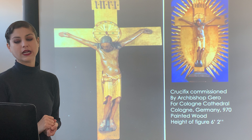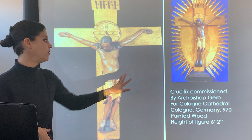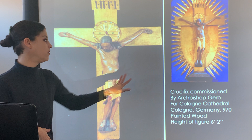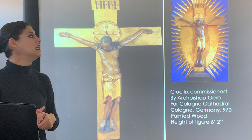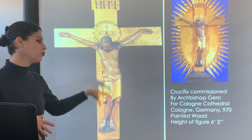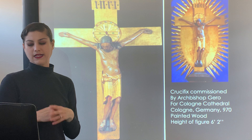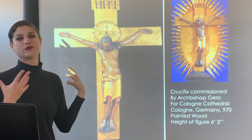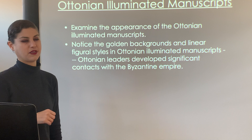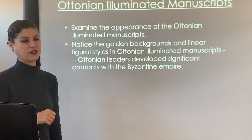This is the Gero Crucifix, commissioned by the Archbishop for the Cologne Cathedral in Cologne, Germany. It's painted wood, displayed with golden rays, with 'Jesus, King of the Jews' inscribed on top. It is actually a wooden reliquary itself, housing a sacred object. It is painted wood from the year 970. A wooden sculpture that's lasted over a thousand years is something that is noteworthy.